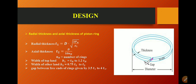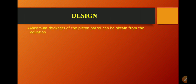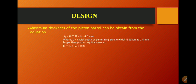There should be a gap between the free ends of the ring. We must provide this gap for exact fitting and exact landing on the grooves of the piston. The gap between free ends is given as 3.5 t1 to 4 t1. The maximum thickness of the piston barrel can be obtained from the equation: t3 equals 0.03D plus B plus 4.5 mm, where D is the radial depth of the piston ring groove, taken as 0.4 mm.